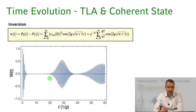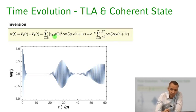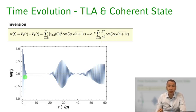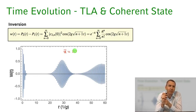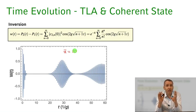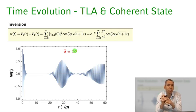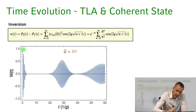So now let's plot this. Remember the initial probability distribution: the atom is in the excited state, but the probability to have n photons is given by the Poissonian probability distribution. Here I've plotted the inversion as a function of time in units of the inverse coupling constant g for a mean photon number of 20. You can see that we get something quite different than the semi-classical Rabi oscillations.